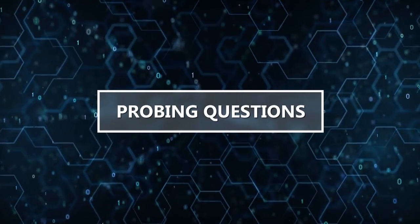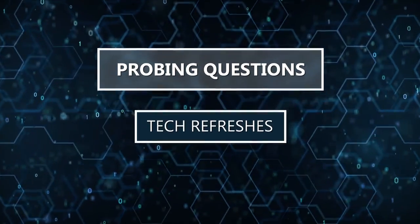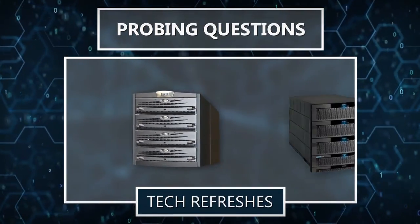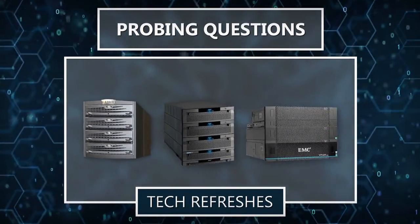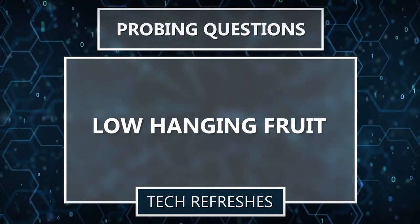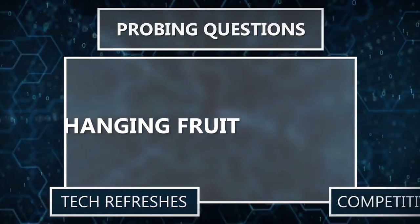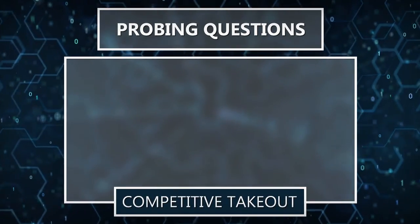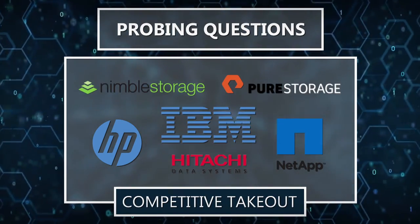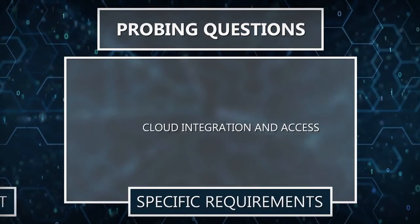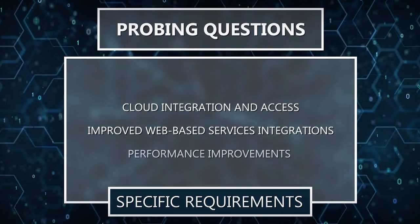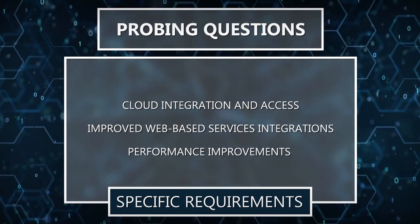Probing questions should focus on discovering the following types of customers: those who are planning tech refreshes, especially for the thousands of EMC Clarion, Celerra, and VNX1 products that are still active across the install base — this is truly Unity's low-hanging fruit. Those that are a candidate for a competitive takeout, especially from HP, NetApp, HDS, Pure Storage, Nimble, and IBM. And those that require cloud integration and access, looking for improved web-based services integrations, or who are seeing performance issues in their mid-range systems.